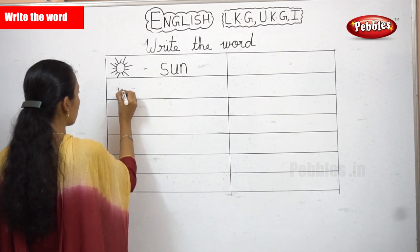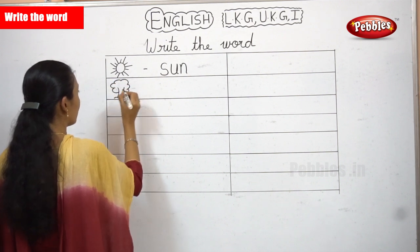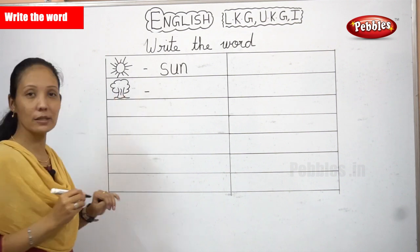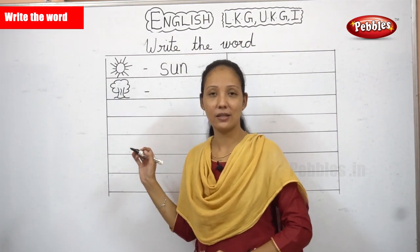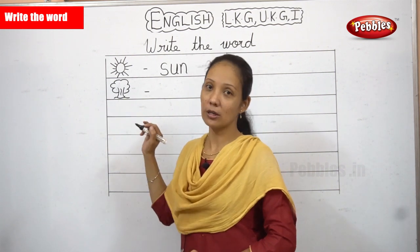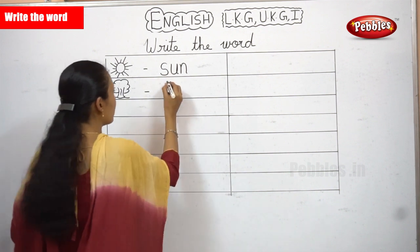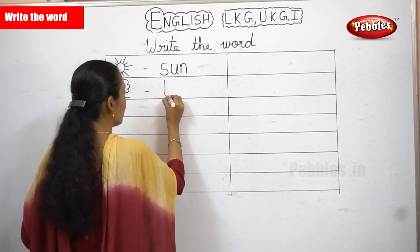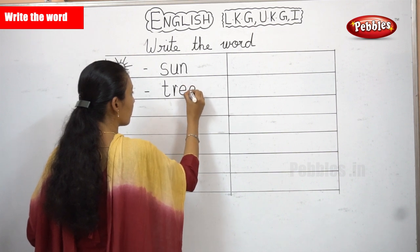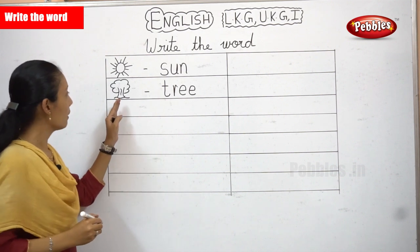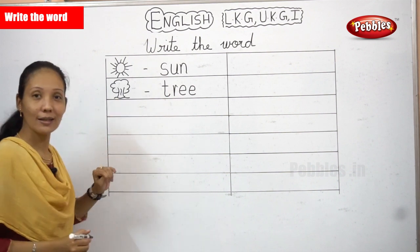Shall I draw the next picture for you? What picture is this? This is a tree. You can also practice to draw a tree. What is the spelling for tree? The spelling is T-R-E-E. Tree. You can also practice to draw the pictures. Now you have finished sun and tree.